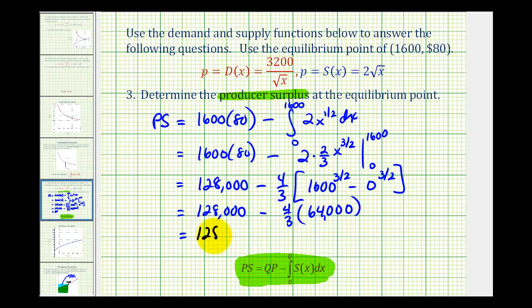So we'll have 128,000, minus, let's round this to the nearest penny, so it's going to be 85,333 dollars and 33 cents.